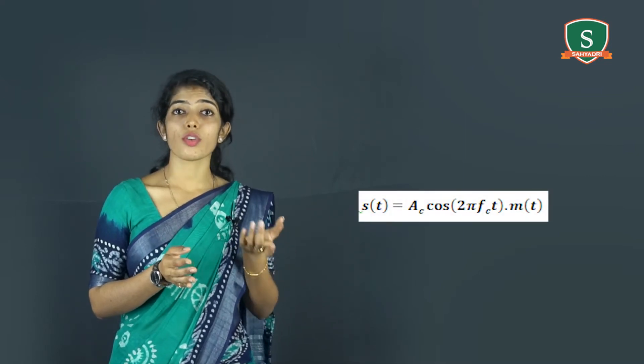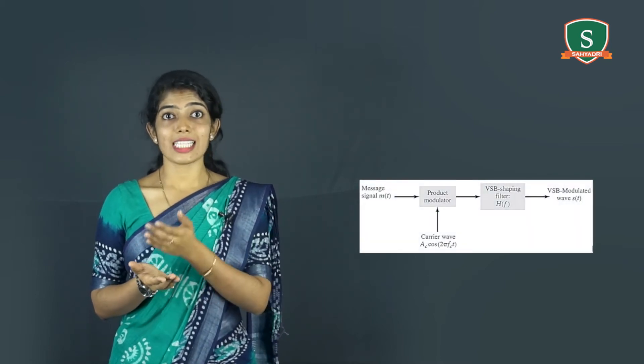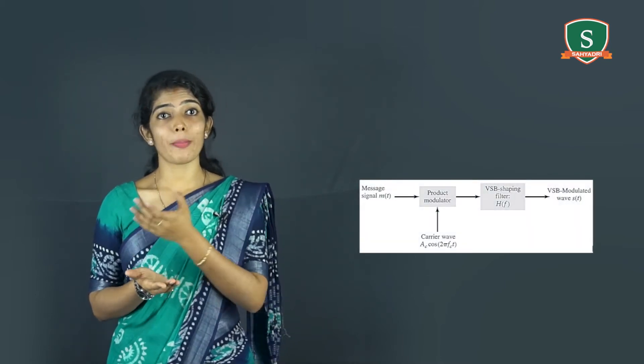The generation of VSB signal is as shown in the figure. Here the output of the product modulator S(t) is equal to AC cos(2π FCT) into M(t).